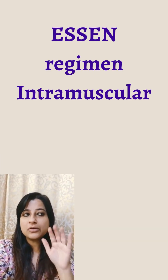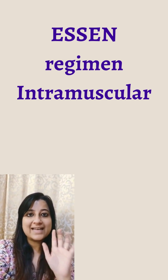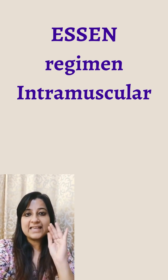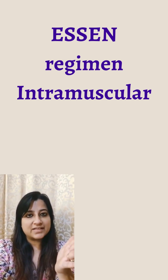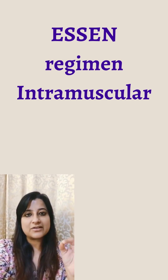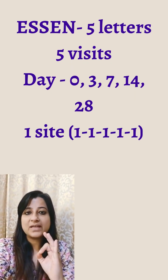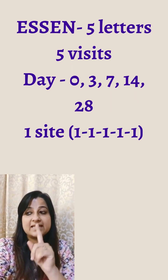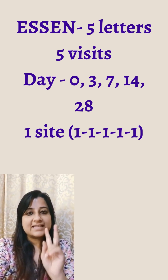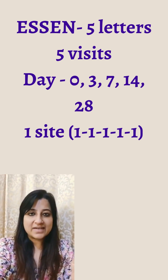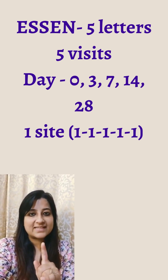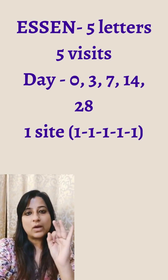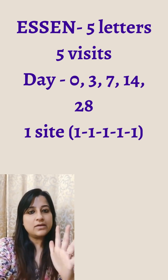Now what is the other one? The Essen regimen. In the Essen regimen, look at the word E-S-S-E-N — five letters, so five visits. And this is an intramuscular regimen. On which days does the person have to make the visit? Day 0, day 3, day 7, day 14, and day 28. But the vaccine will be administered only on one side — so 1-1-1-1-1.